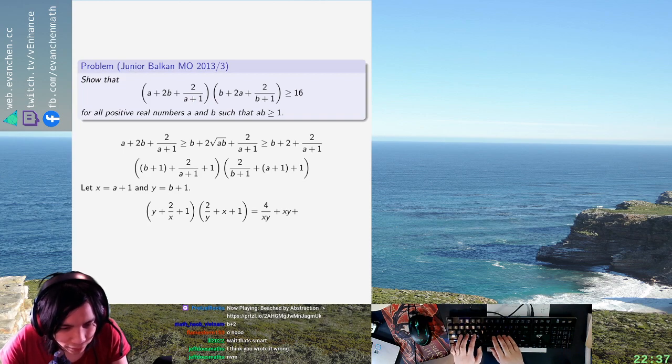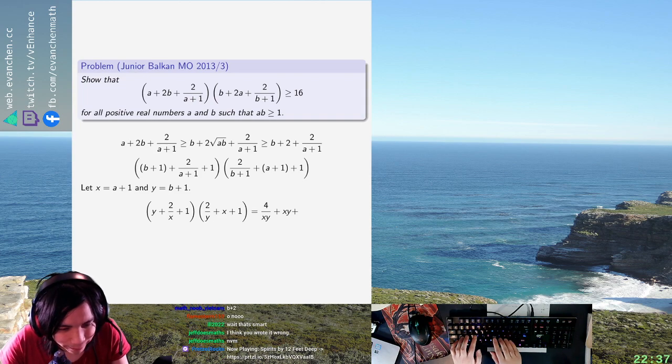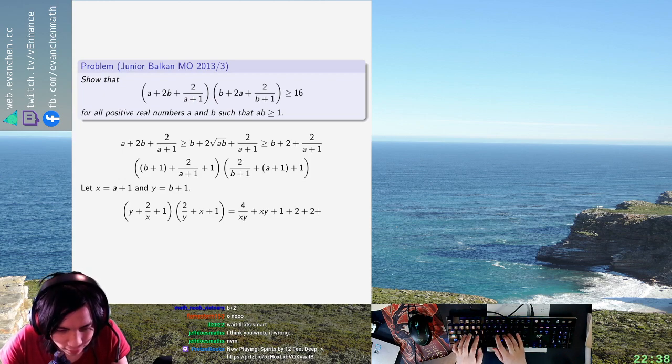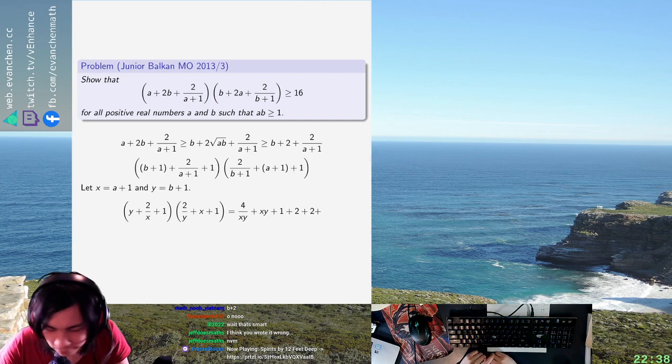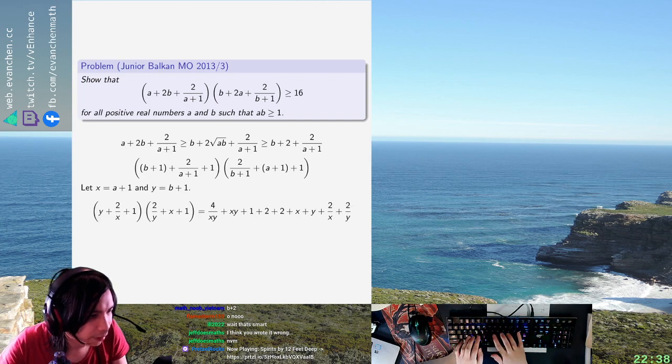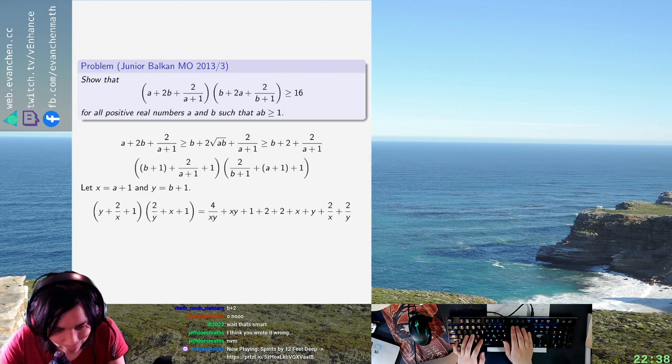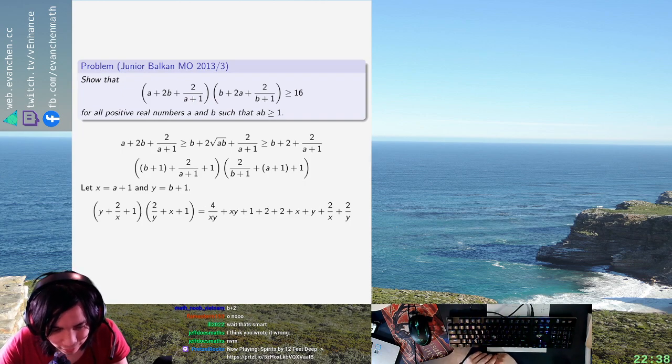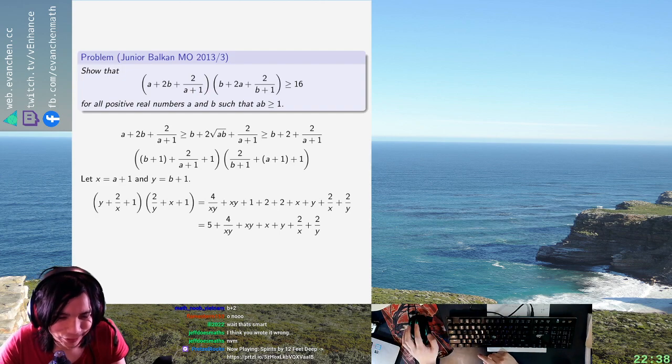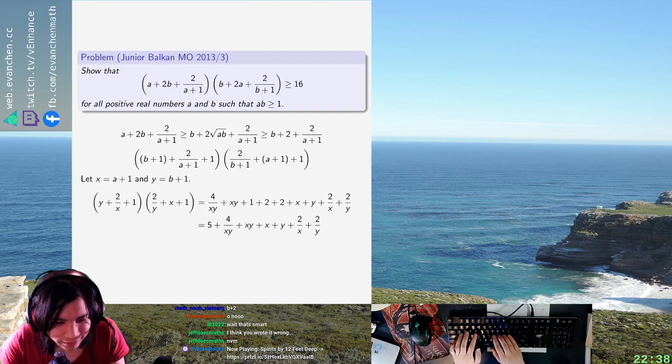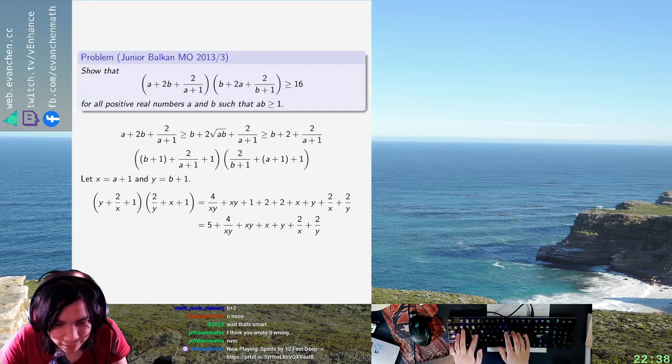Plus 1 plus 2 plus 2 plus... Alright, there should be an x term, right? Okay, there. So, if I'm not clowning, this is 4 over xy plus xy plus x plus y plus 2 over x plus 2 over y. Amazing. This is so not going to work. Okay, so this is 1 over xy times 4 plus xy plus... 2 times 1 over x plus 2 times 1 over y.